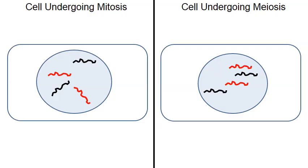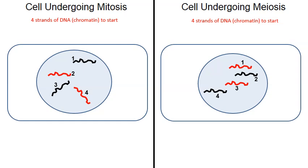On the left a cell will undergo mitosis and on the right a cell will undergo meiosis. Before we get started I want to make a count: there are four strands of DNA called chromatin — loose linear strands of DNA — in the animated cell to the left, and the animated cell to the right also has four strands of DNA or chromatin to start. The red strands are DNA inherited from the maternal side, from your mother. The black strands are DNA inherited from the paternal side, from your father.